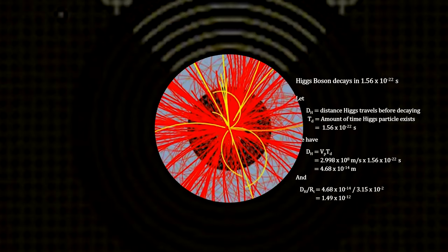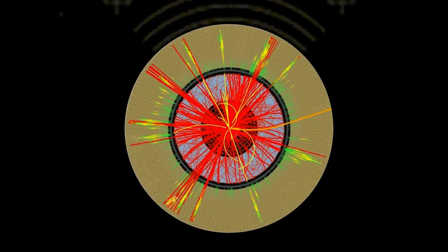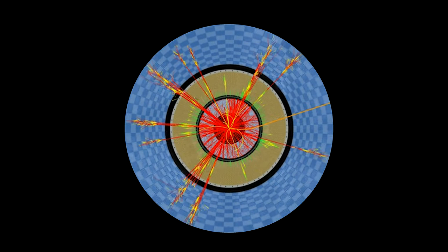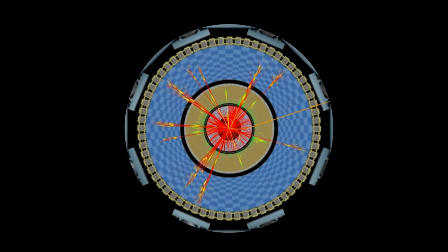We cannot see them directly, but we can detect the lighter particles created by their decay. We can then deduce the originating particles by their decay signatures, just like we did in the cloud chambers on mountaintops.